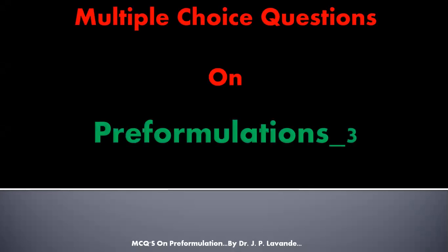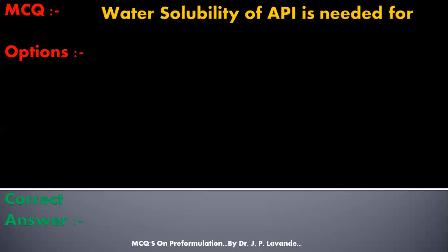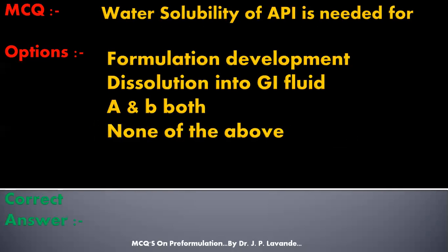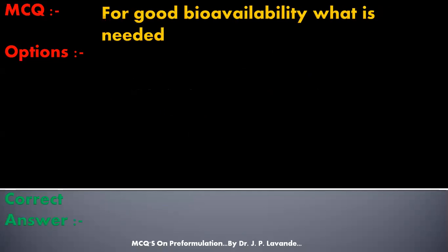Good morning and welcome to the series of multiple choice questions on pre-formulation. Today we are on the third part of this series. The first question: water solubility of API is needed for — options are: formulation development; dissolution into GI fluid; A and B both; or none of the above. The correct answer is A and B both — water solubility of API is needed for formulation development and dissolution into GI fluid.